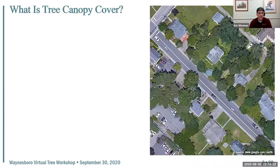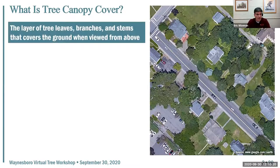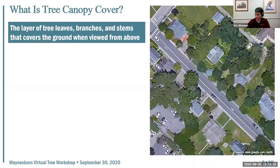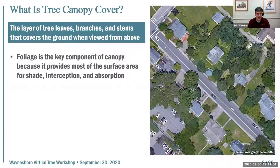The most obvious question we begin with is: what exactly is tree canopy cover? This aerial photograph from Google Earth gives a good sense of how we conceptualize it. A more specific definition: the layer of tree leaves, branches, and stems that covers the ground when viewed from above. What's most important about tree canopy is the foliage itself — the leaves — because they do all of the important ecological and environmental things we associate with canopy: providing surface area for shade, stormwater interception, and pollution absorption.